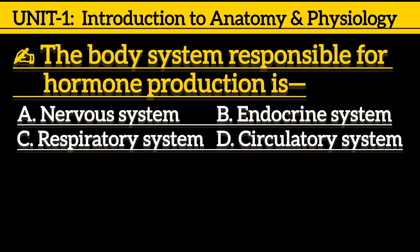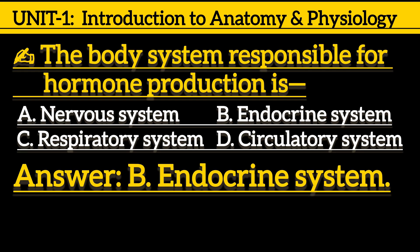Next one is, the body system responsible for hormone production is: option A, nervous system; option B, endocrine system; option C, respiratory system; option D, circulatory system. Correct answer is option B, endocrine system.